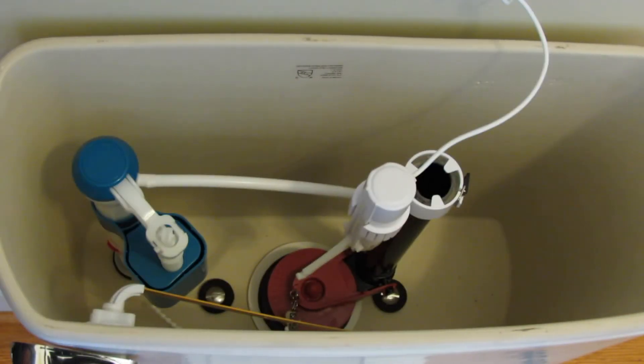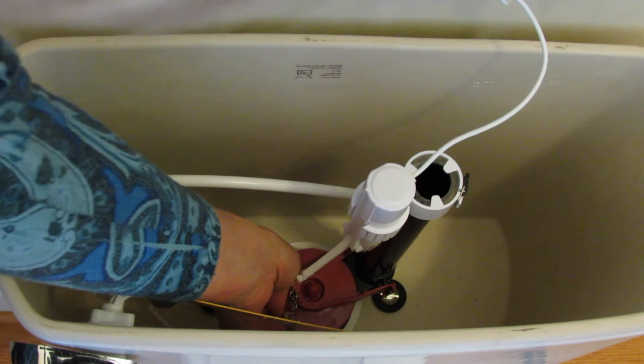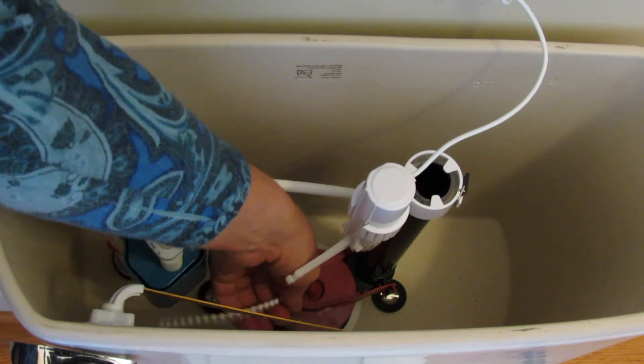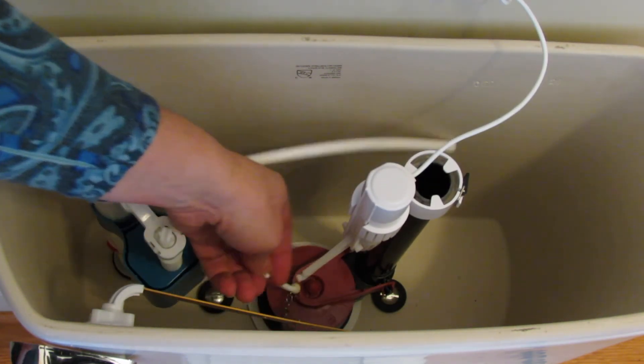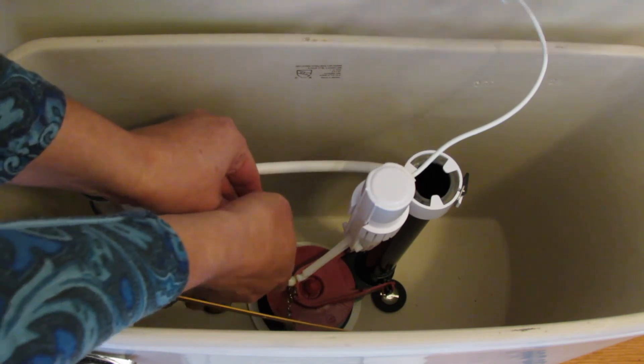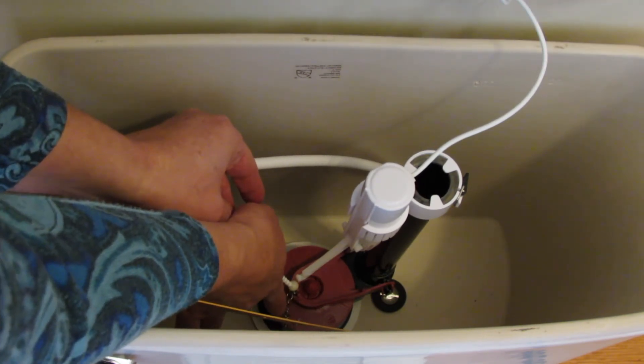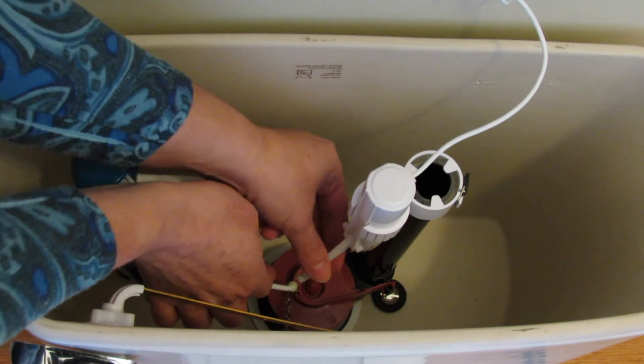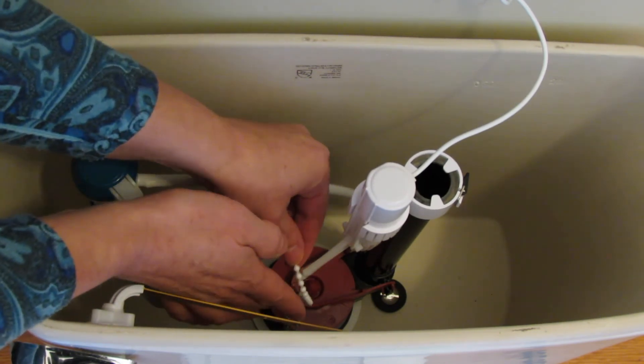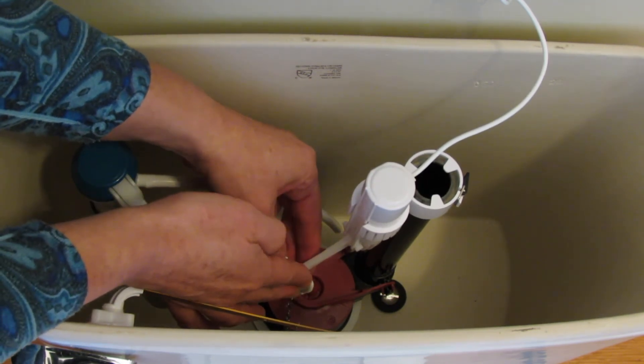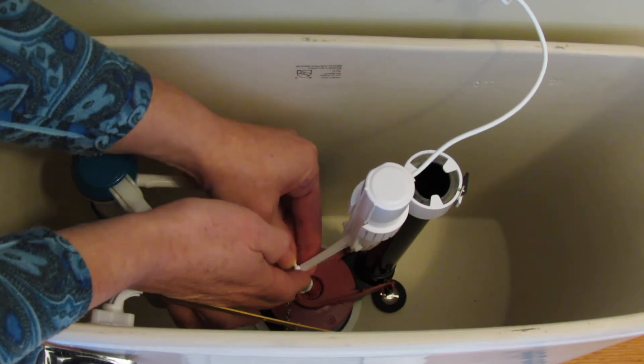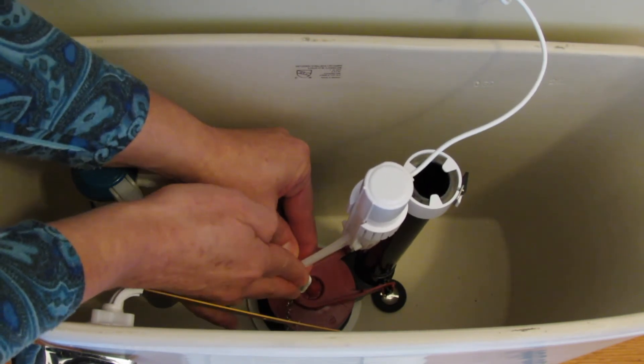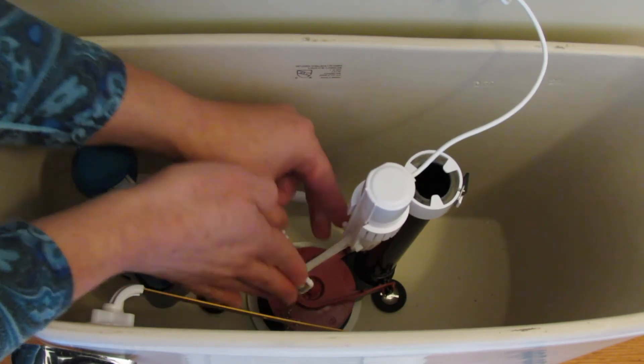The next step is to attach our 6-inch bead chain to the flapper valve, and it attaches where the other chain does as well. The upper part of the chain attaches to the lever arm, and you want to leave a little bit of slack in the chain.